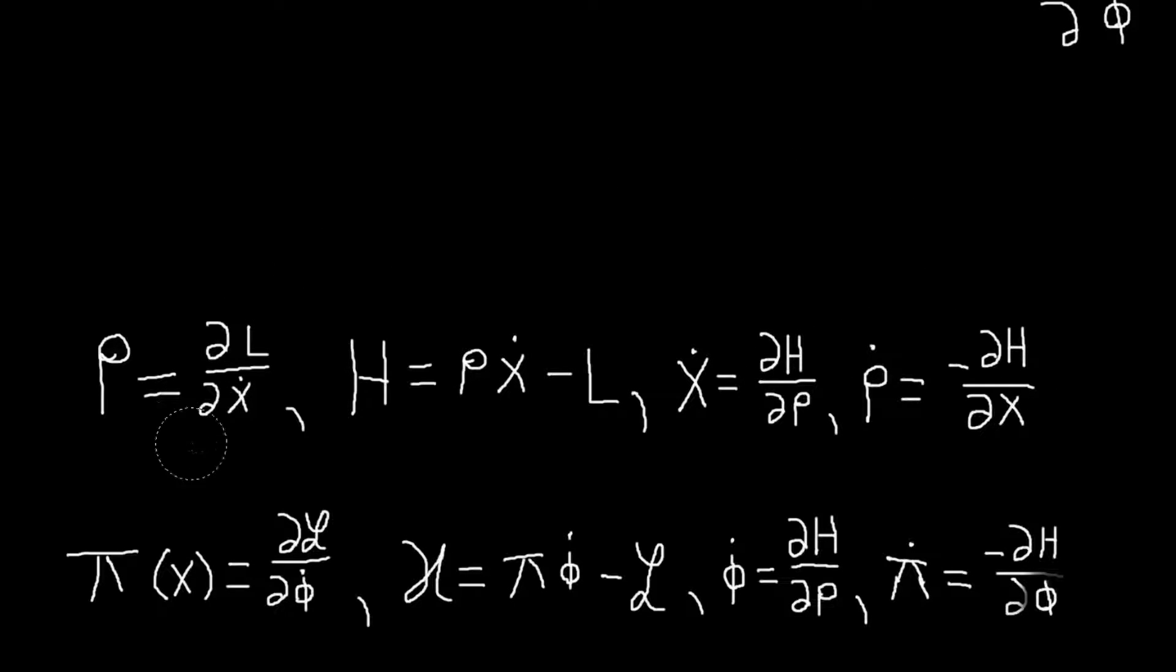And now in field theory, we're going to have similar kinds of equations. So we're going to define a conjugate momentum field in the same way we defined our conjugate momentum earlier. This time it's the derivative of the Lagrangian with respect to the time derivative of the field. And our Hamiltonian will be this, and we will have equations of motion that are like this.